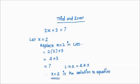So what we did: we first tried x equals 1, then x equals 2. If x equals 2 was also not correct, we would try x equals 3, and keep trying until we get the exact value that satisfies the equation. This is the Trial and Error method. Let's do one more example.